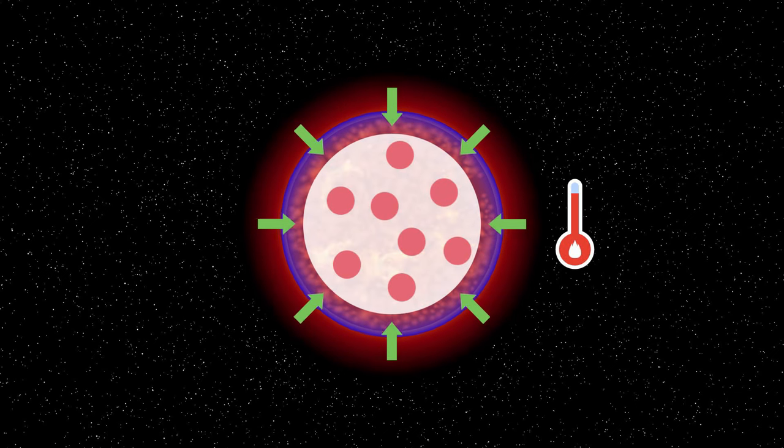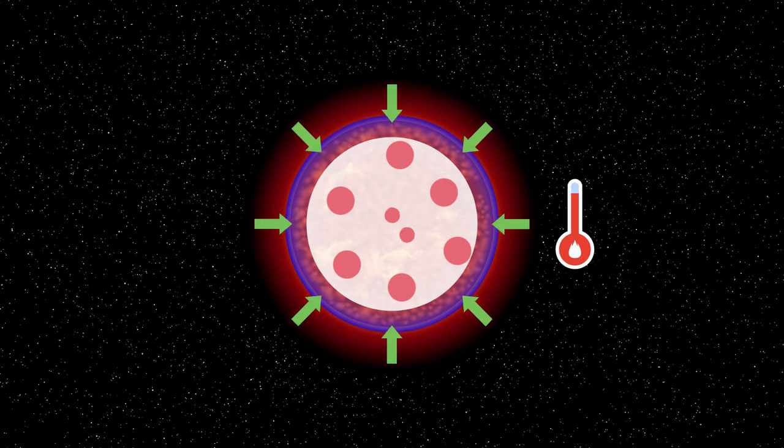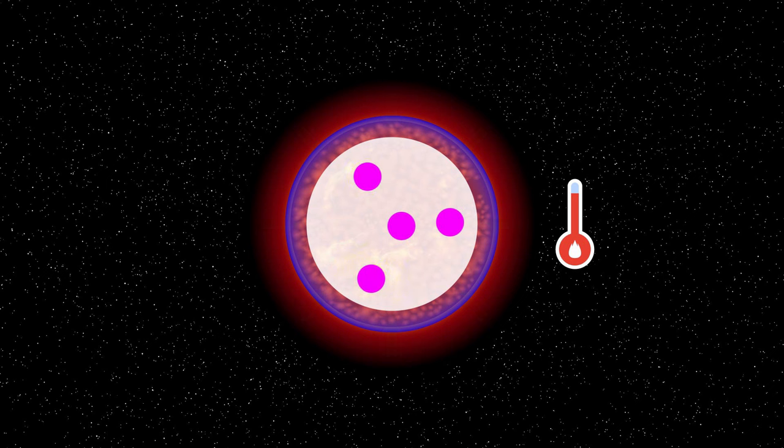As it does so, its temperature increases even further, and now the helium in the core has sufficient energy to fuse, which makes higher elements in the periodic table.